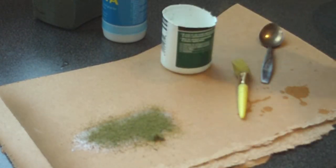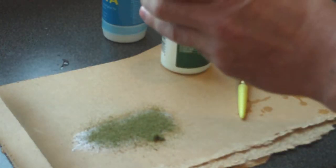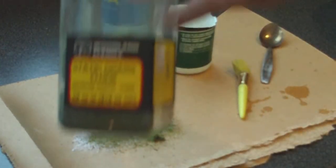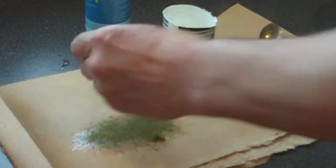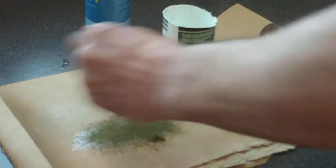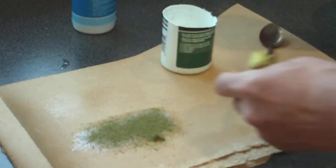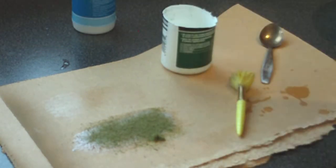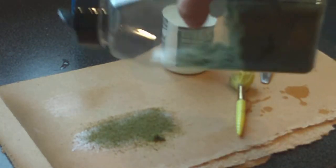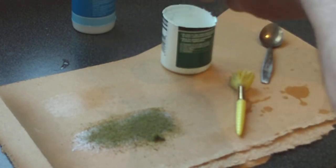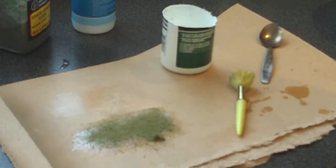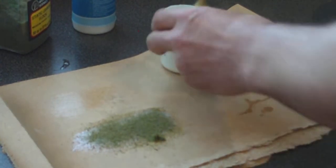For thicker grass you can use a shaker, which is a woodland scenics one. You basically spray it on with the glue and then shake it. You turn it upside down and shake it - I'm not doing that right now because I'll show you this in a minute when I've mixed the glue.